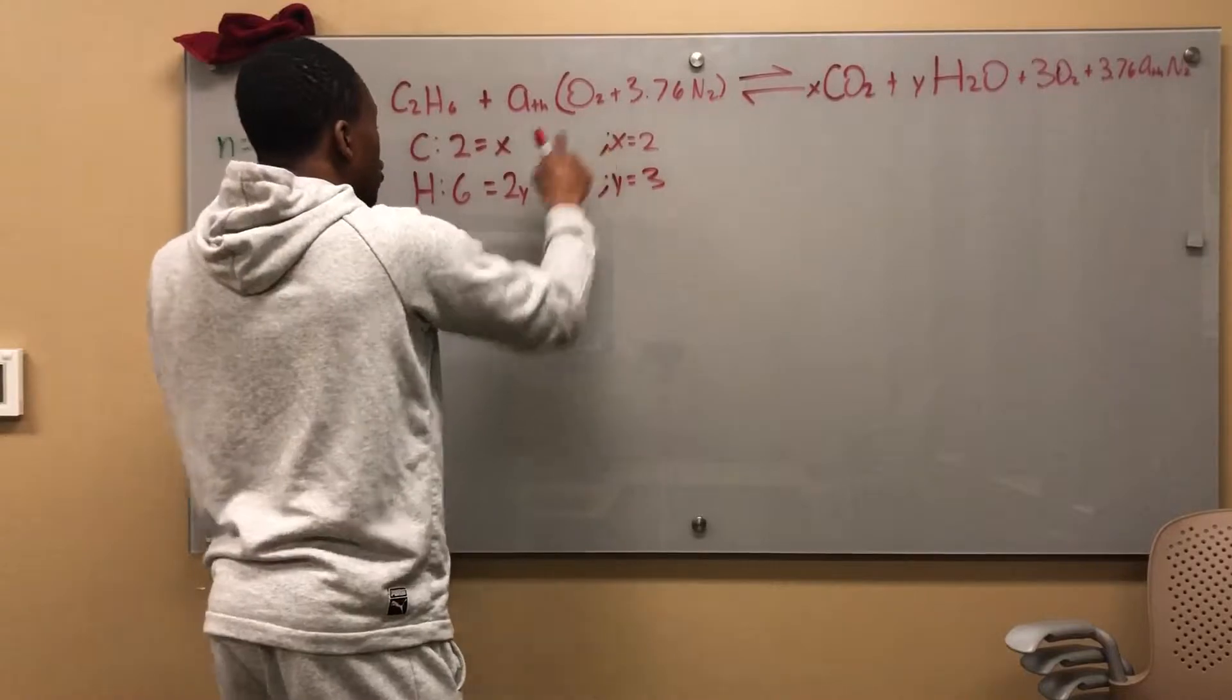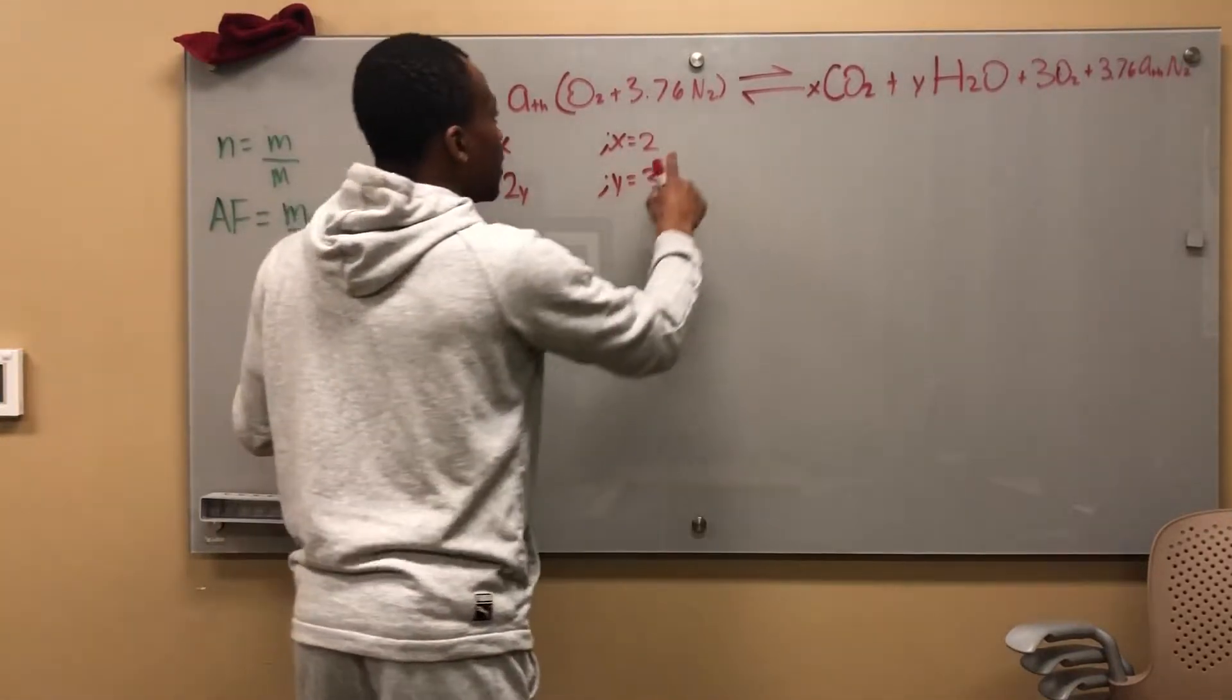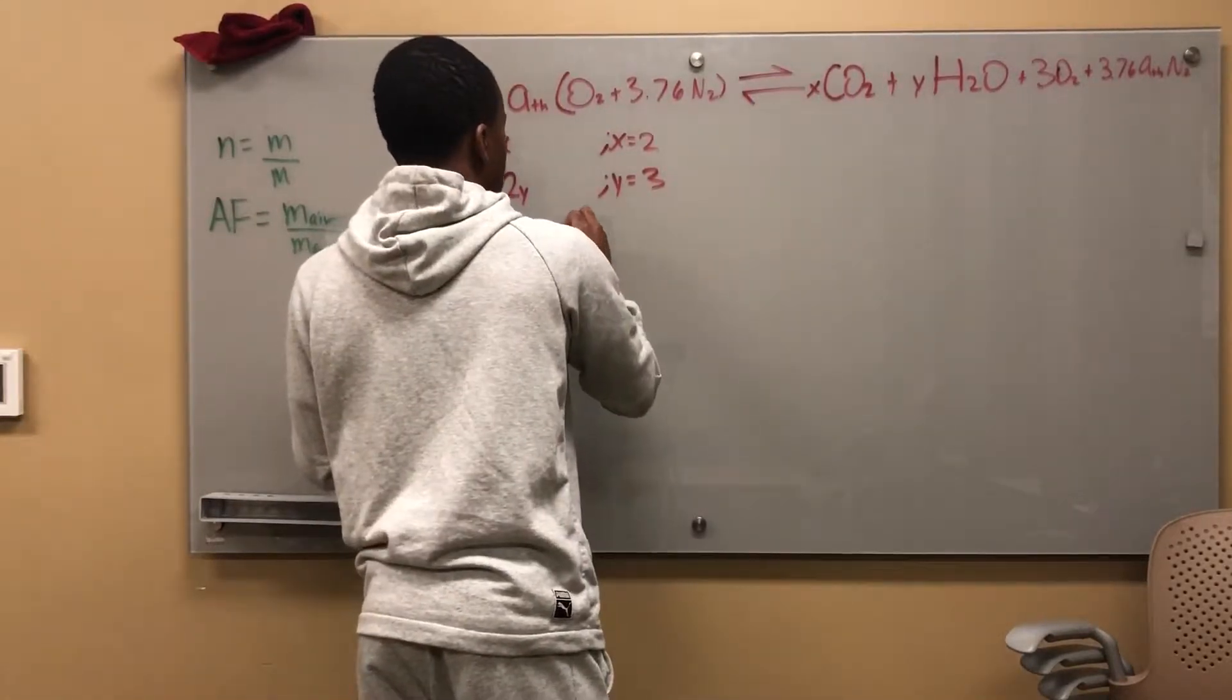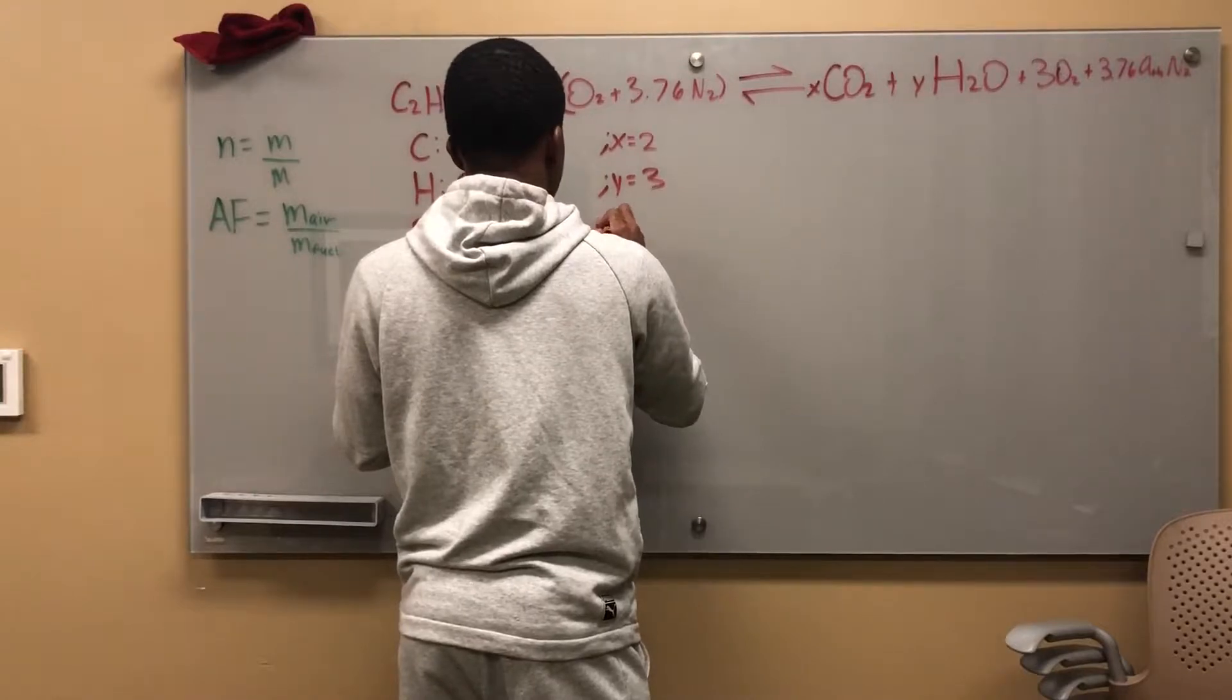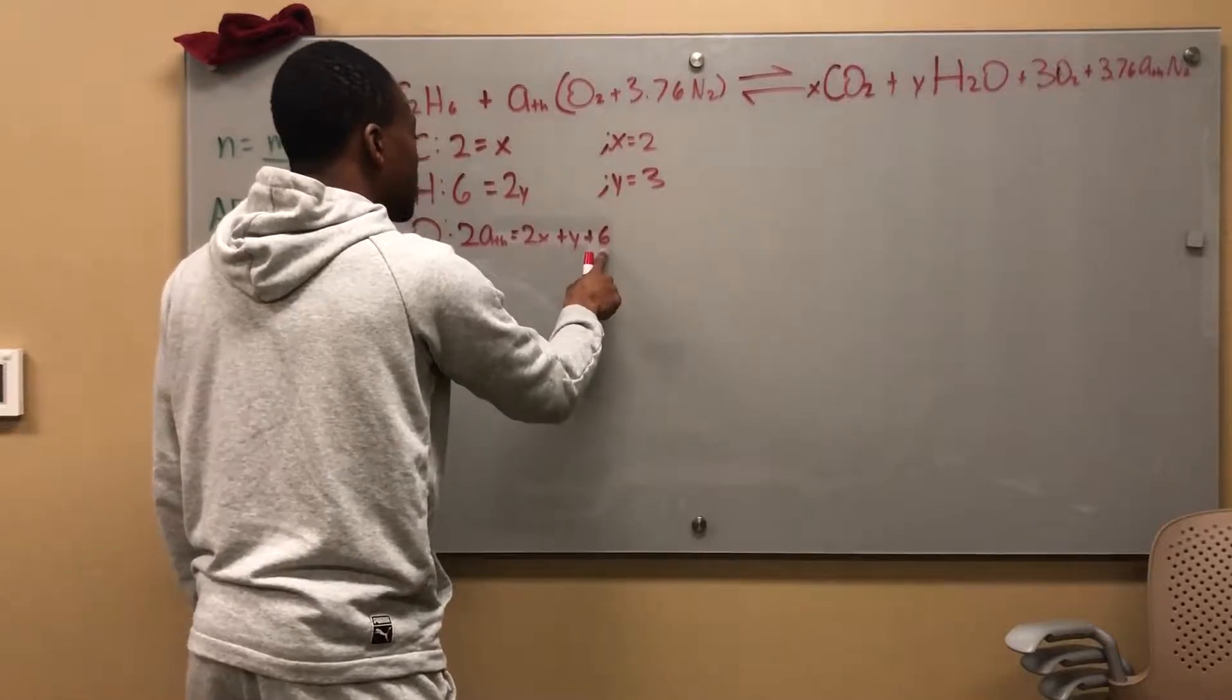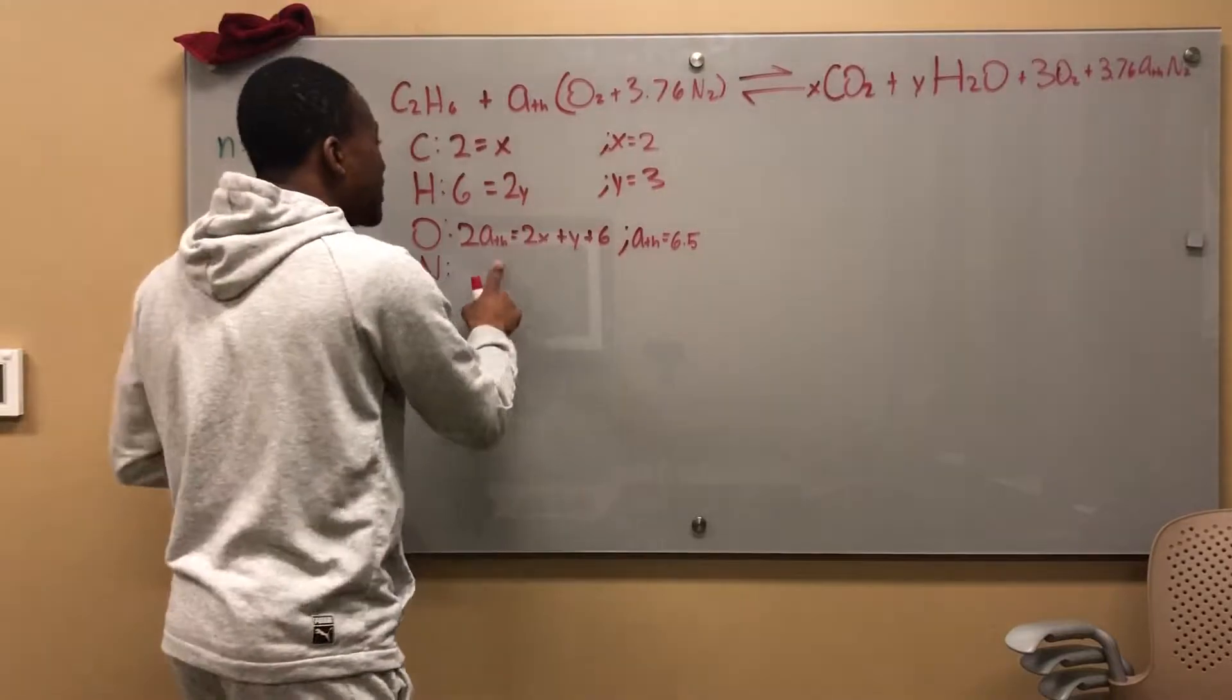O. So I have two. I'm going to go ahead and solve. So two X plus Y, two times two is four plus three is seven plus six is thirteen. So ATH, my ATH is going to be equal to 6.5 because 13 is equal to two times ATH. So my ATH is 6.5.